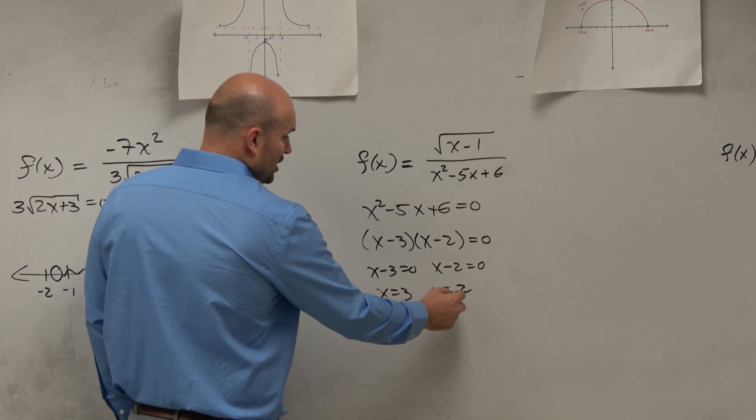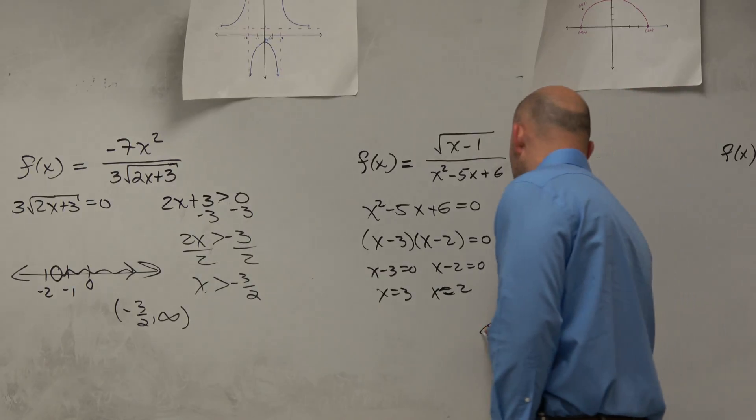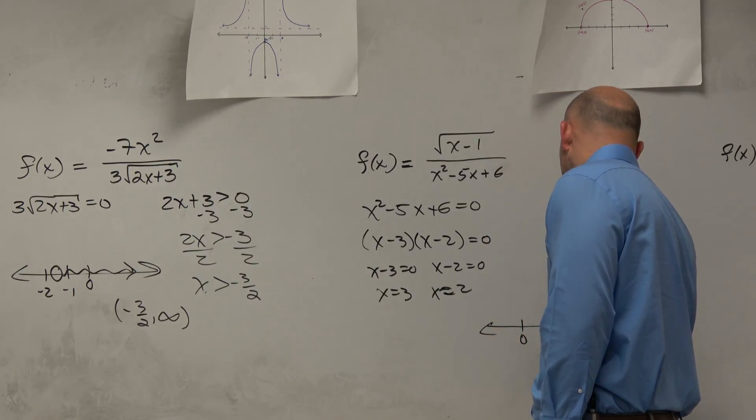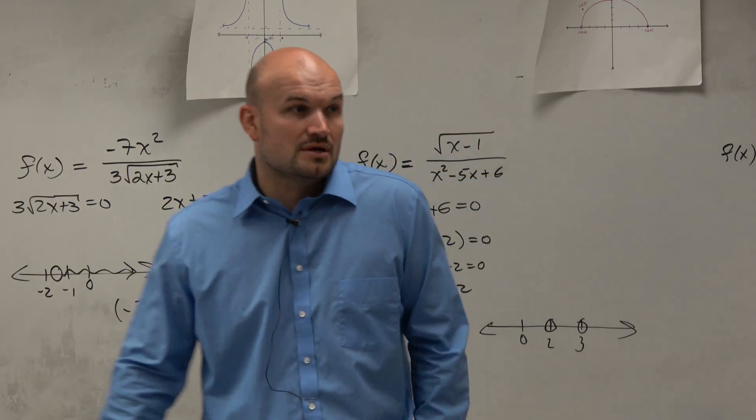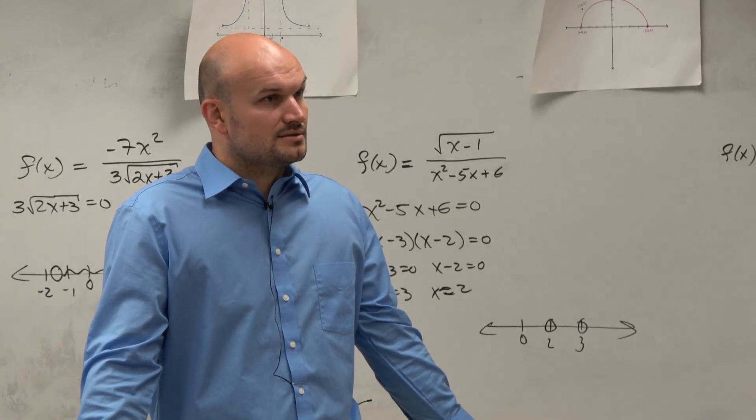See, these are undefined values. So if I was to go ahead and graph this at 0, at 2, and at 2, and at 3, I have undefined values. Does that make sense? No, yes. OK.